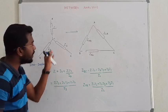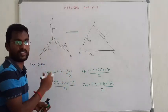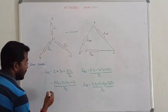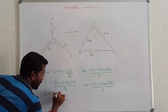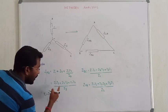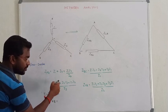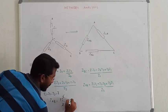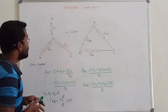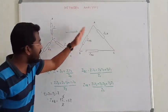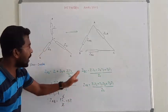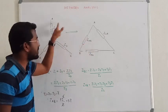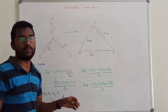That is how we find the equivalent delta impedance from star. Suppose if you want to reverse the process. Suppose all impedance are equal: Z1 = Z2 = Z3 = Z. Then Z_AB becomes Z·Z + Z·Z + Z·Z all divided by Z, which is 3Z² divided by Z, giving 3Z. So star to delta with equal impedance gives 3 times Z.